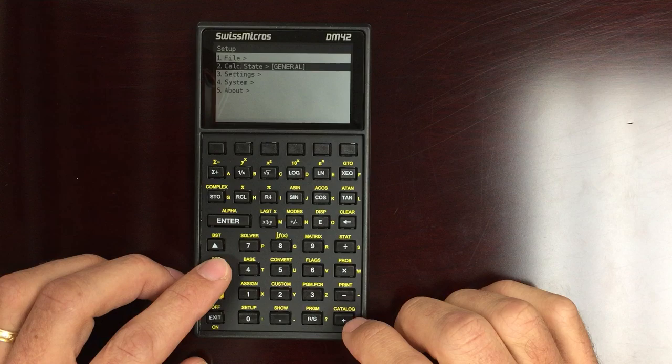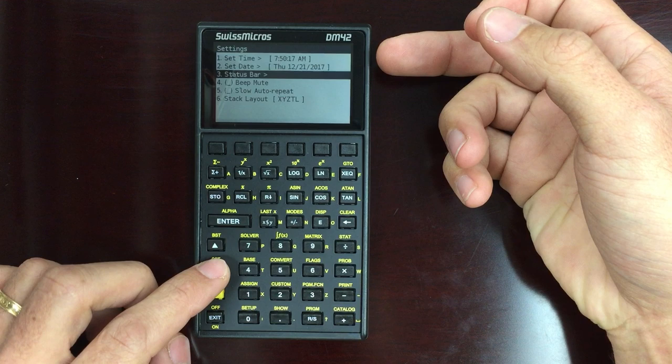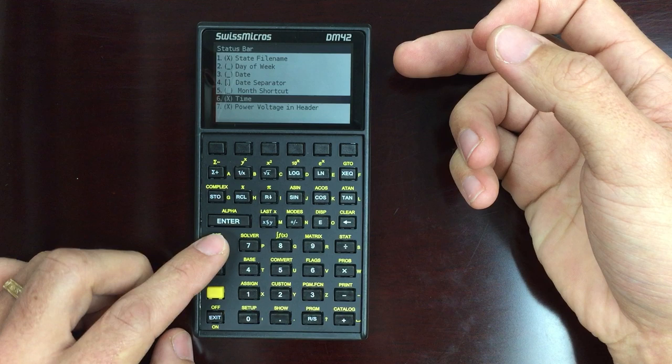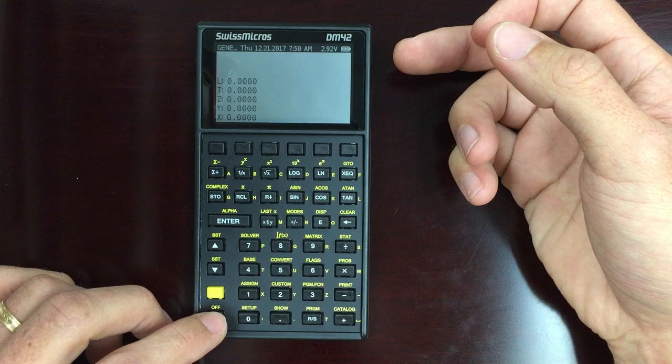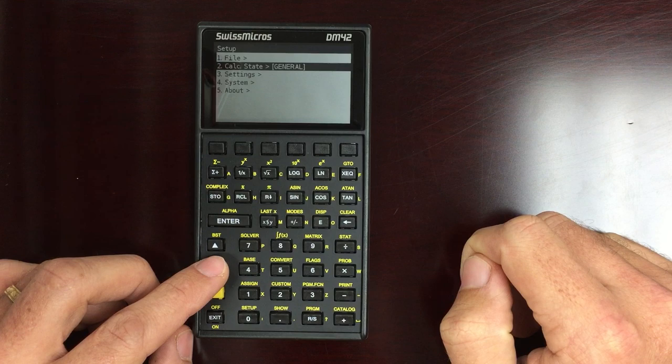Now, what else should I show? So other general settings. You can go in here, set your time in the status bar. I can display the time if I want to. I've chosen not to. I can do that. I can set the date, the day of the week. And now when I go back into the menu, I've got those displayed at the top of my calculator.